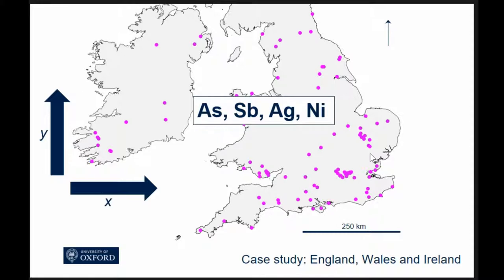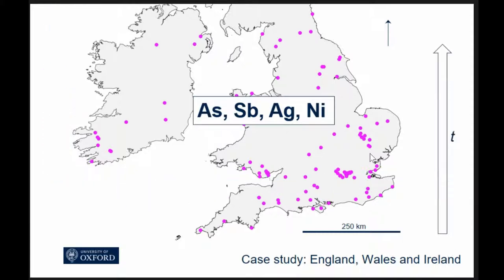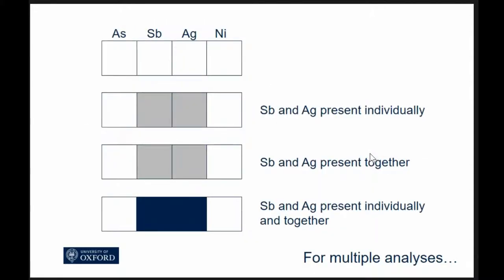We need to think about how the presence and absence of those trace elements is changing across space and across time. If we have antimony and silver present - if we're stacking up multiple analyses, we have two grey squares. If we have them together, we also have two. If we have them appearing separately and together, you can see that differentiation.